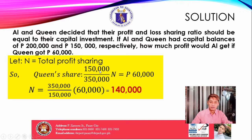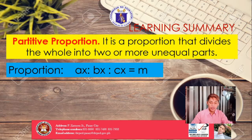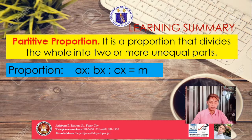For the learning summary: partitive proportion is a proportion that divides the whole into two or more unequal parts. We write the proportion as AX to BX to CX equals M, where A, B, and C are the unequal parts, X is the constant of proportionality, and M is the total amount.